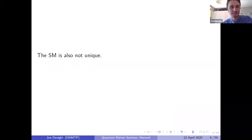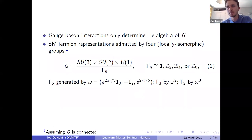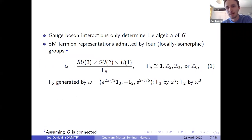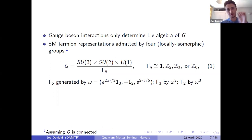A fact perhaps less widely appreciated is that the standard model, as often posed as a gauge theory, is in a sense not unique. The gauge group of the standard model is not uniquely fixed by what we know from experiments. Everything we know about the interactions of gauge bosons from experiment only determines the Lie algebra of the standard model gauge group to be that of SU(3) × SU(2) × U(1). There are many different gauge groups with this Lie algebra.